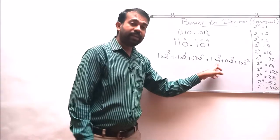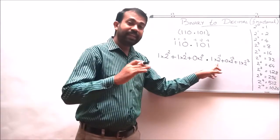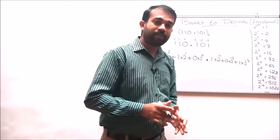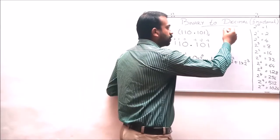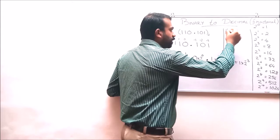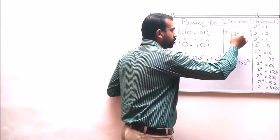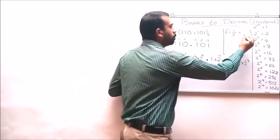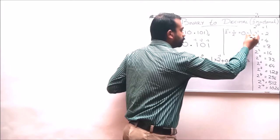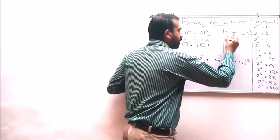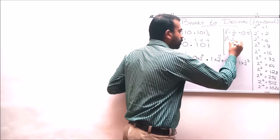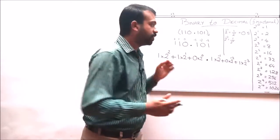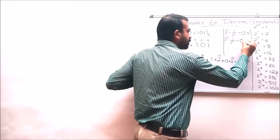In the rightmost or fractional portion, we can see the negative powers or inverse powers. So let us write down those inverse power values. 2 raised to minus 1 means 1 by 2 raised to 1, which equals 1 by 2, meaning 0.5. 2 raised to minus 2 means 1 by 2 raised to 2, that is 1 by 4, which means 0.25.